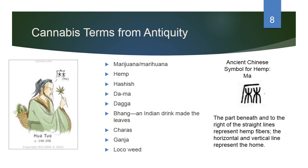The ancient Chinese symbol for hemp is the word 'ma.' The part beneath and to the right of the straight lines represents the hemp fibers; the horizontal and vertical lines represent the home. So in symbolic writing, what you're seeing is hemp and home combined — quite interesting.